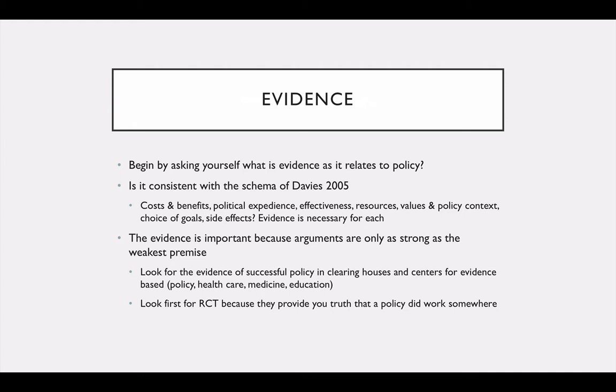You need to begin asking yourself, what is evidence as it relates to policy? Is it consistent with the schema of Davies in 2005, which you all read about? Some of the things that were identified in this schema are cost and benefits, political expediency, effectiveness, resources, values, policy context, choices and goals, and side effects. And for each and every one of those, you need evidence.